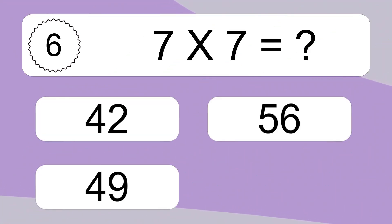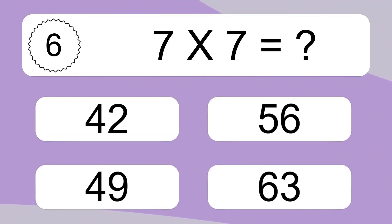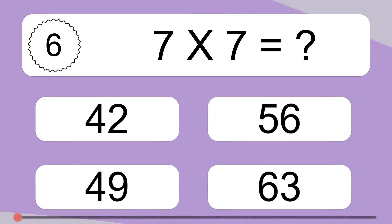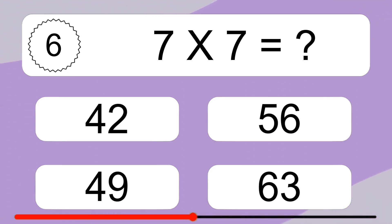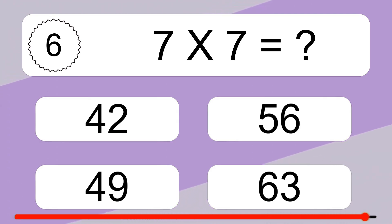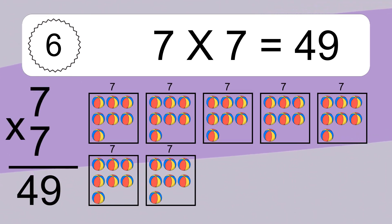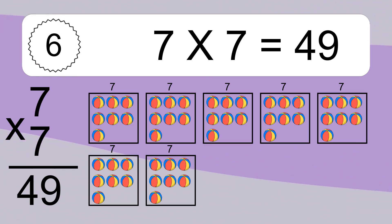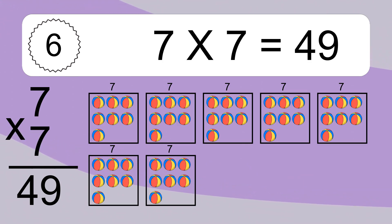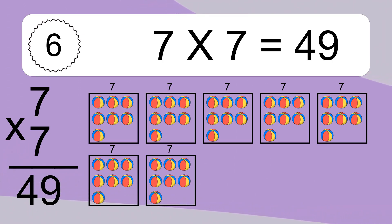7 times 7 equals what? 7 times 7 equals 49. We have 7 boxes and each box has 7 colorful balls inside. If you count all the balls in all the boxes together, you will have 7 times 7 balls. This equals 49 balls.